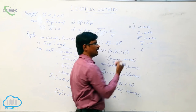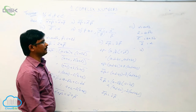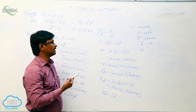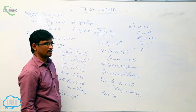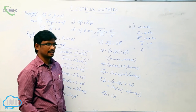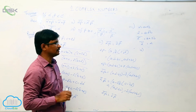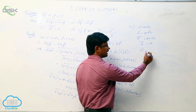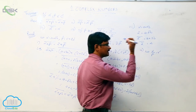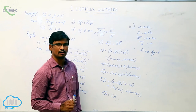Fourth property: we have to show that the conjugate of alpha divided by beta equals alpha conjugate divided by beta conjugate, where beta is not equal to zero. Because if beta equals zero, it is in the denominator and anything divided by zero is not defined. So we take beta not equal to zero. To prove this, let alpha divided by beta equal to gamma.